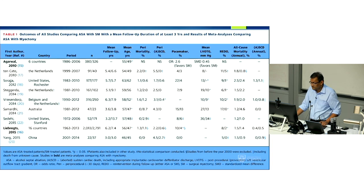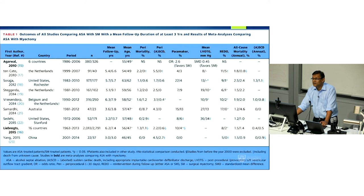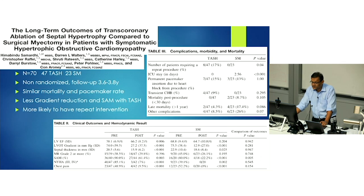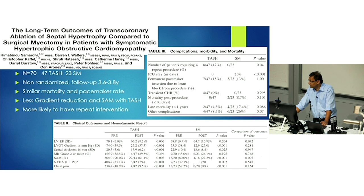This meta-analysis of studies comparing alcohol versus surgical myectomy with more than three-year follow-up shows no increase in sudden cardiac death, slightly less gradient reduction, a slightly increased need for reintervention, and a slightly increased pacemaker rate in the alcohol ablation group. Local data from Connor Roney and Darren Walters' group in Brisbane looked at 70 patients — 47 alcohol septal ablation and 23 surgical myectomy — with follow-up to 3.8 years. There was similar mortality and pacemaker rate in both groups, but less gradient reduction and SAM with the alcohol group and a higher likelihood of repeat intervention.